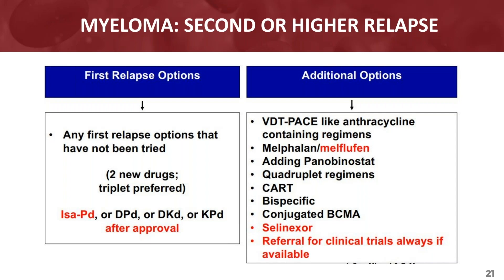We have options. When somebody relapses — I love the way you said it — relapse is guilty until proven otherwise, especially early relapse. You want to try to get rid of the disease, so triplet, quadruplet — whatever is appropriate for the patient based on their medical conditions, we should try. Because every time the patient relapses, we do not do as well with subsequent relapses.